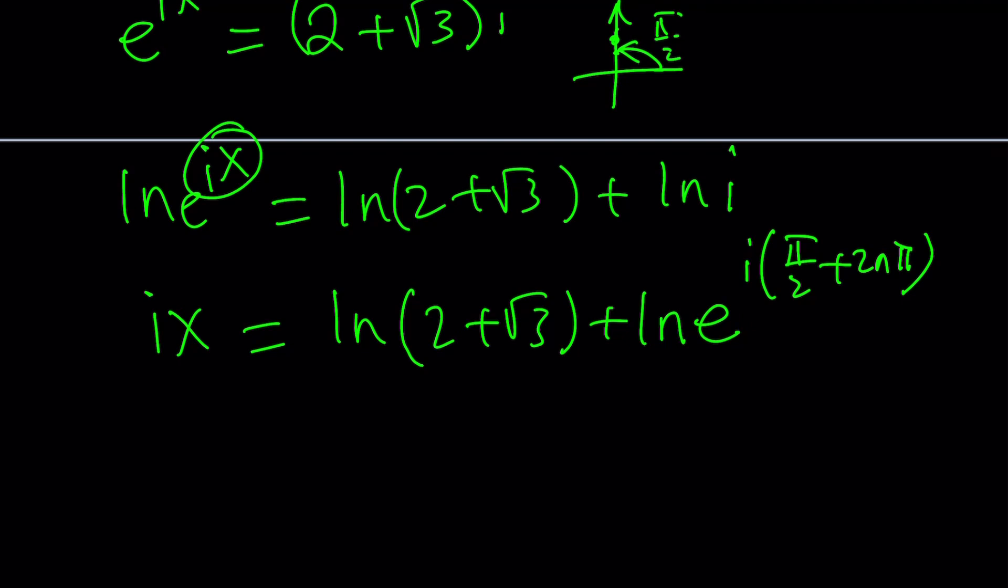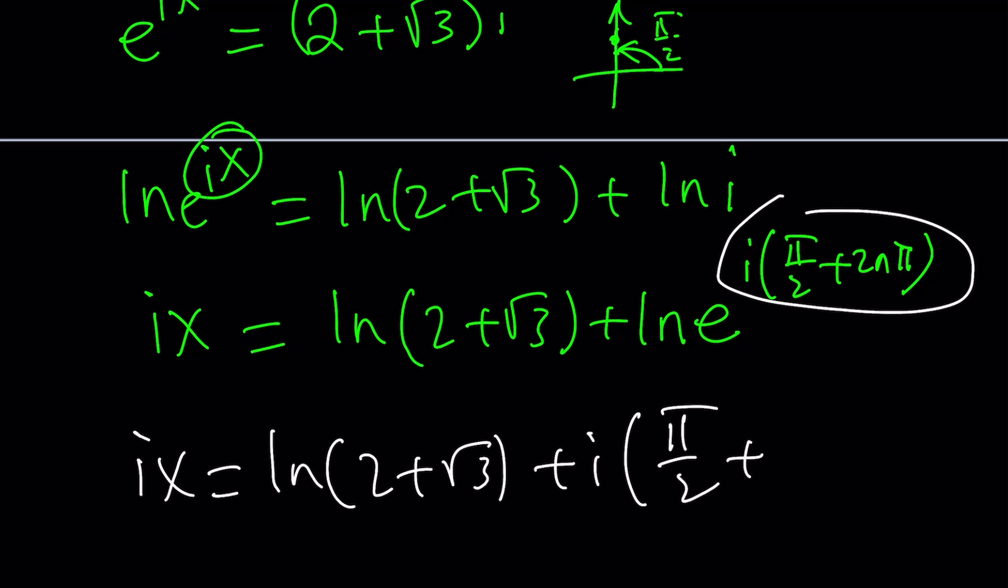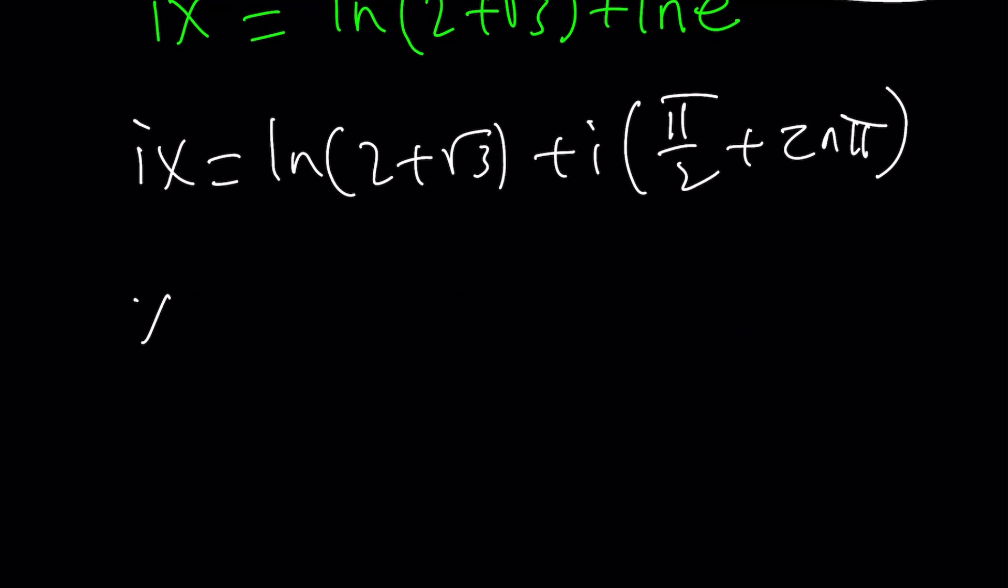And then we can bring this to the front just like before. So we get ix equals ln of 2 plus root 3 plus i times pi over 2 plus 2n pi. And then we can work this out. Divide both sides by i or multiply both sides by negative i. And this is what you're going to get from here. Negative ln 2 plus root 3i. And then i times negative i is going to be negative i squared, which is positive 1. So we're just going to add this part. And that'll be it. So that's the x value.